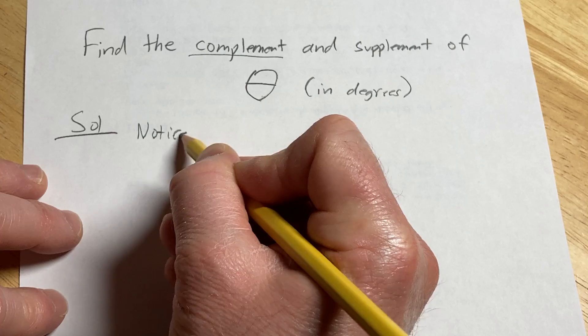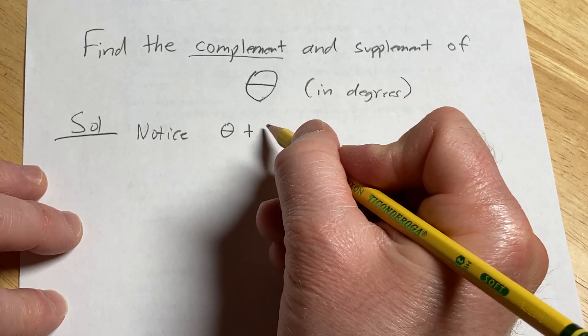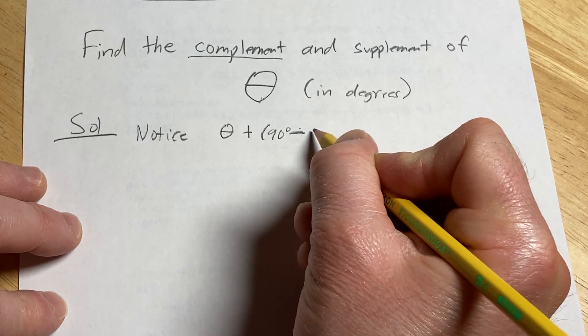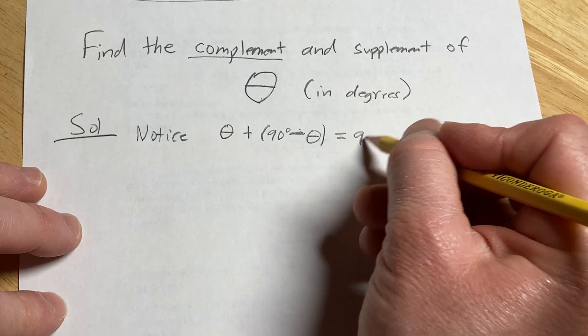Notice if you take theta and you add 90 degrees minus theta, what's going to happen is these thetas are going to cancel and you're just going to get 90 degrees.